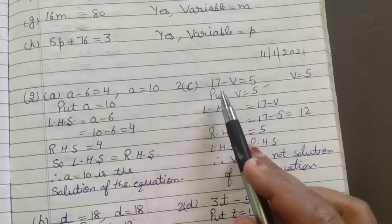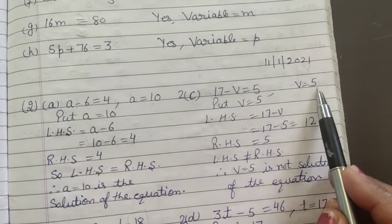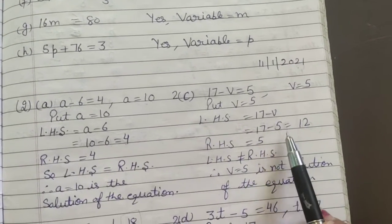So now part c, 17 minus v equals 5. Here we have to put the value of v, which is 5. So we will take left hand side, 17 minus v, put v equals 5.